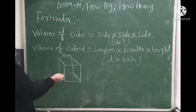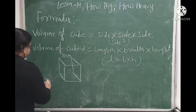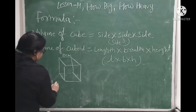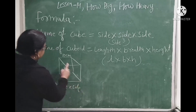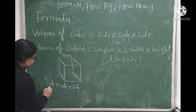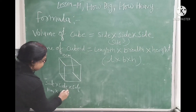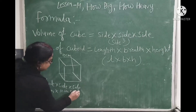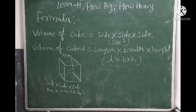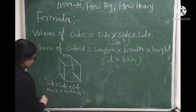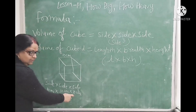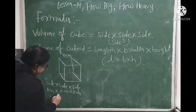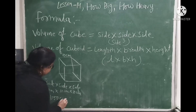The formula is side into side into side, because all sides of a cube are equal. So, if one side is 10 cm, the other side is 10 cm, and the other side is 10 cm — we calculate: 10 into 10 is 100, and 100 into 10 is 1000. So the volume is 1000 cm³.